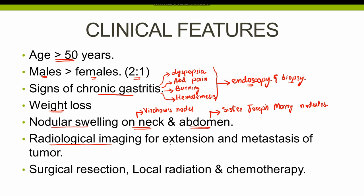Radiological imaging is also done for determination of tumor extension and metastasis. The tumor commonly metastasizes to lungs, ovaries, and lymph nodes, and can also extend into the peritoneum and liver. Treatment for gastric adenocarcinoma is surgical resection, local radiation, and chemotherapy. In early cases, the prognosis is better with a 5-year survival rate greater than 90%, whereas in late cases the prognosis is poor with a 5-year survival rate less than 20%.